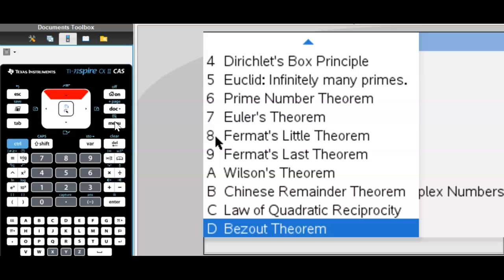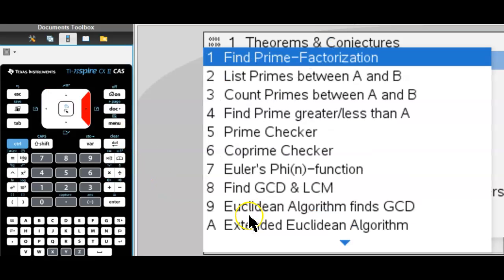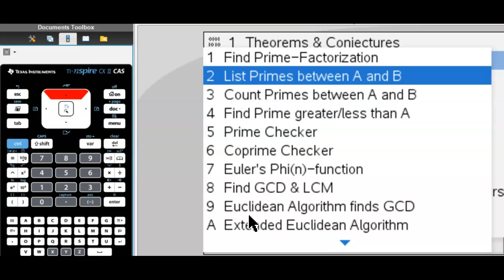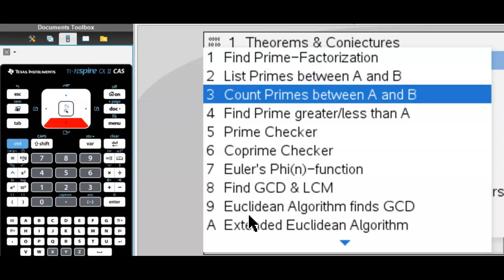These are all theorems that we have here, all the way down to Bezu theorem. Primes, of course, that's the heart of number theory. We list primes, we do a prime factorization.